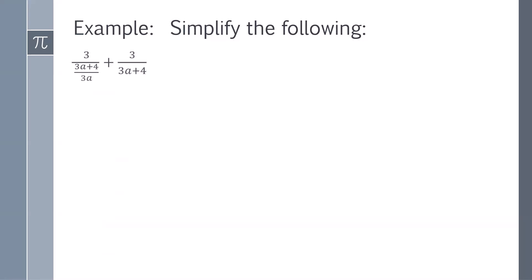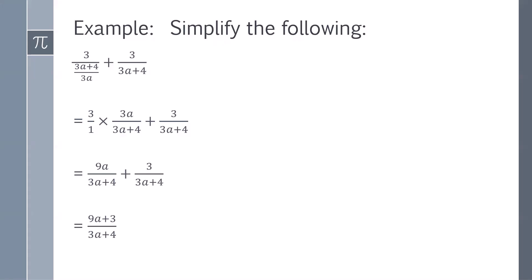Here's another example: 3 over 3a plus 4 over 3a plus 3 over 3a plus 4. Let's start by flipping and multiplying the first fraction. So we have 3 over 1 times 3a over 3a plus 4, and we're adding that to 3 over 3a plus 4. That gives us 9a over 3a plus 4 plus 3 over 3a plus 4. Since they both have a common denominator, we can simply add to get 9a plus 3 over 3a plus 4.